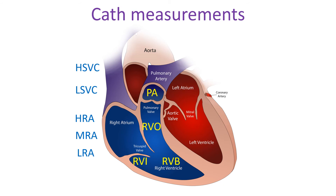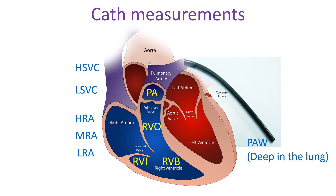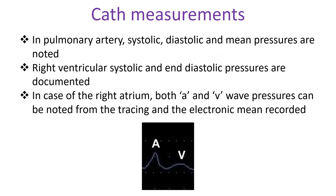In the right ventricle, samples can be taken from the inflow, body, and outflow if a shunt at the ventricular level is suspected. The pulmonary artery can be sampled from the main pulmonary artery, branch pulmonary arteries, and wedge positions depending on the clinical situation. When there is difficulty in getting a true wedge pressure, pulmonary artery diastolic pressure is sometimes taken as a surrogate of wedge pressure. In the pulmonary artery, systolic, diastolic, and mean pressures are noted.